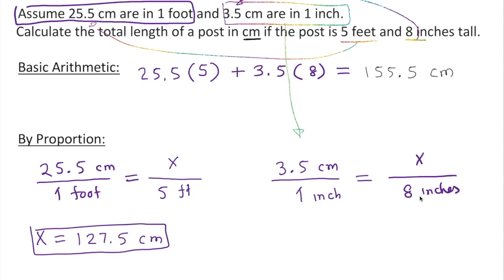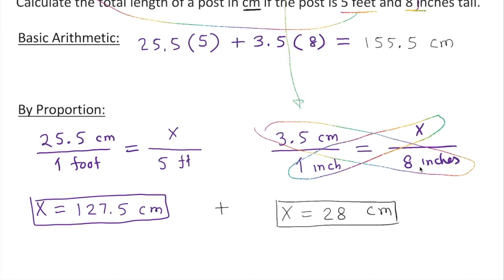Same thing with cross product. Ignoring the unit, 1 times x is x, equal to 8 times 3.5, equals 28 centimeters. Now we're going to add those two: 127.5 plus 28 equals 155.5 centimeters. That is our answer.